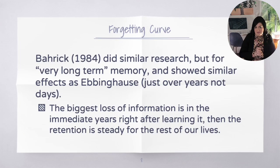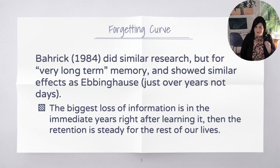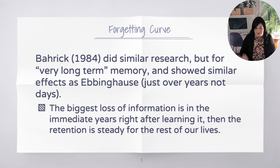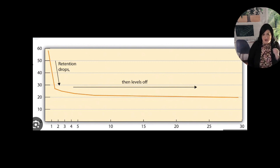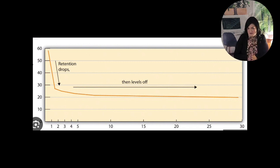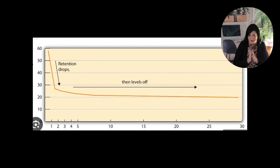Barack in 1884 showed a pattern similar to Ebbinghaus with the forgetting and retention of Spanish vocabulary over 50 years. Let's say it's Spanish 1 in high school — you understand the vocabulary, it's all retained. Look at how quickly in the first two or three years after having learned it, retention goes down, but then you see it kind of levels off. There's a slight decrease, but what you remember after those first two years kind of maintains itself.